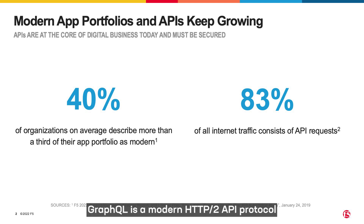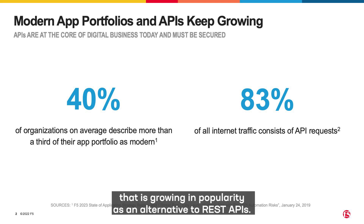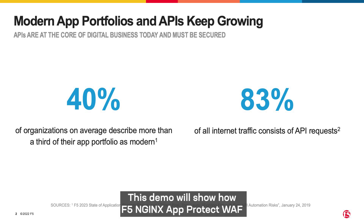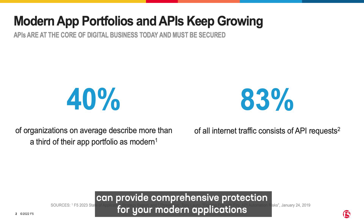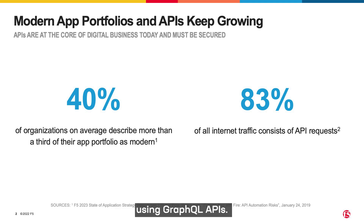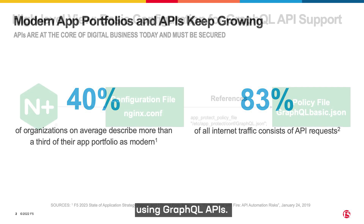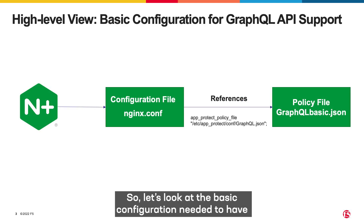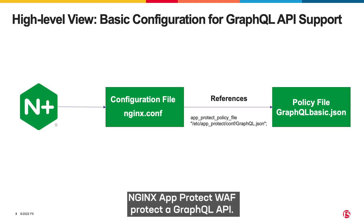GraphQL is a modern HTTP2 API protocol that is growing in popularity as an alternative to REST APIs. This demo will show you how F5 NGINX AppProtect WAF can provide comprehensive protection for your modern applications using GraphQL APIs. So let's look at the basic configuration needed to have NGINX AppProtect WAF protect a GraphQL API.